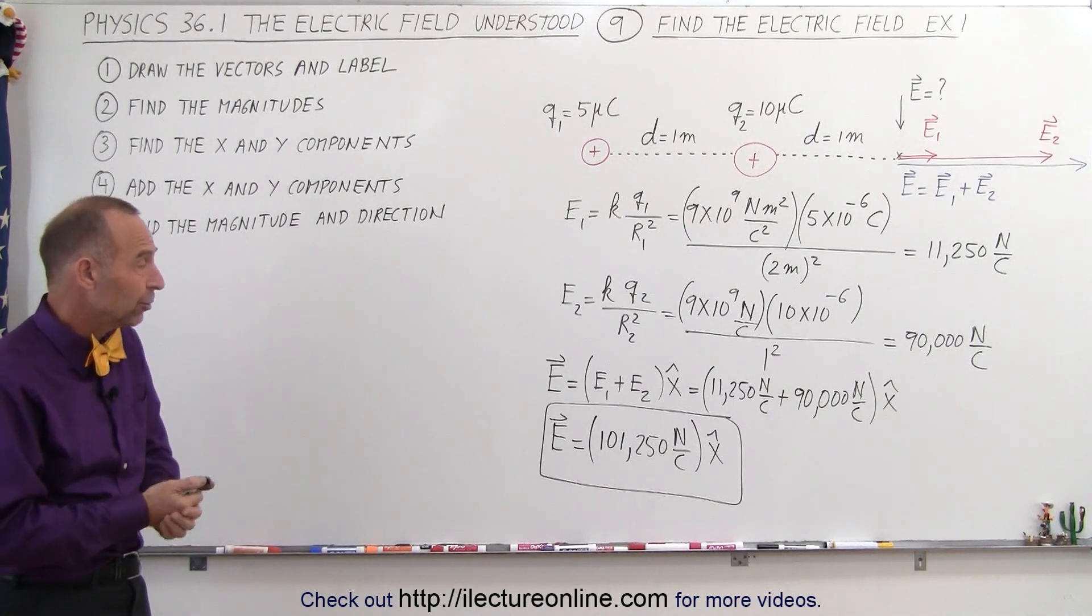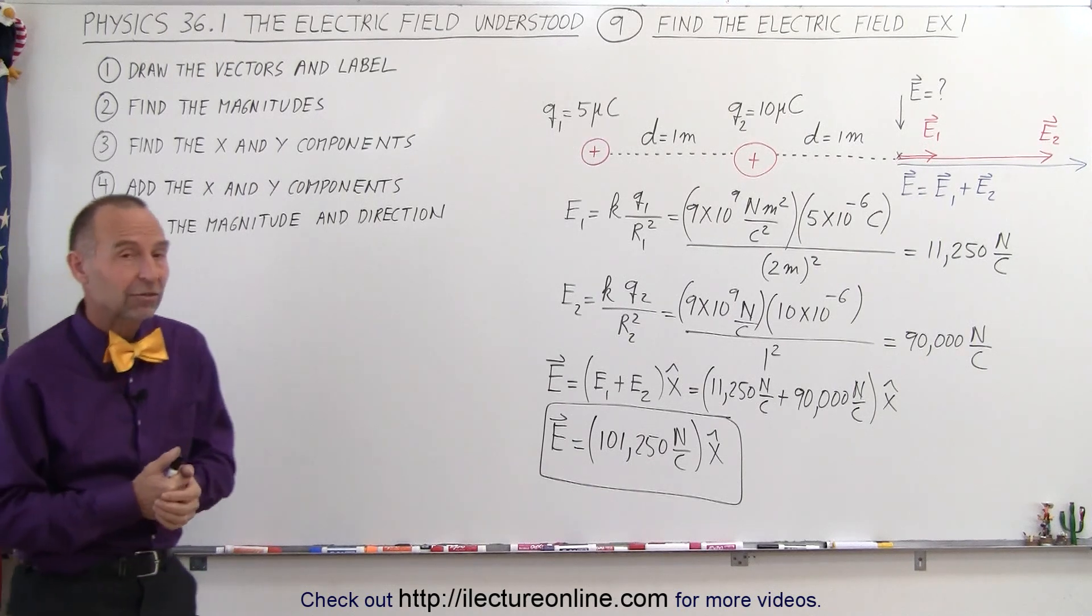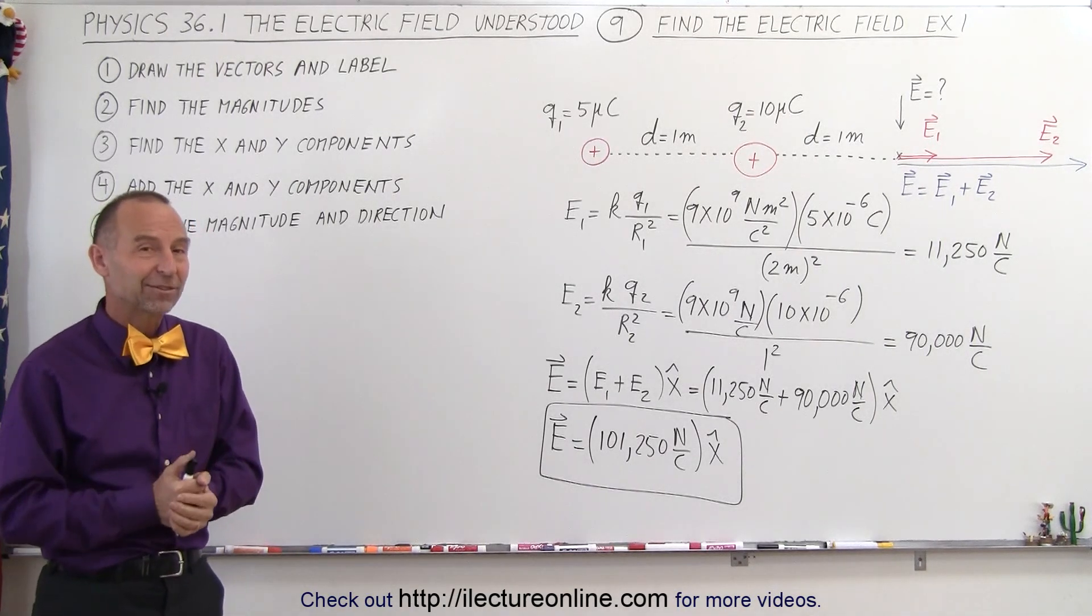Magnitude of 101,250 newtons per coulomb in the positive x direction, and that's the answer.